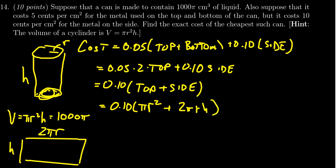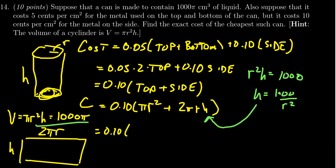Now cost is a function of two variables, r and h. We need to remove one variable using the constraint. Dividing the constraint by π gives r² h = 1000. Dividing by r² gives h = 1000/r². Making this substitution into our cost function: C = 0.10π(r² + 2πr × 1000/r²).